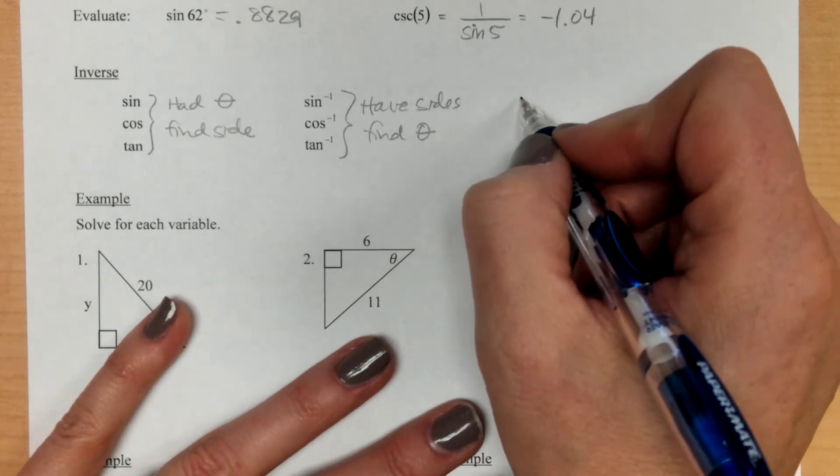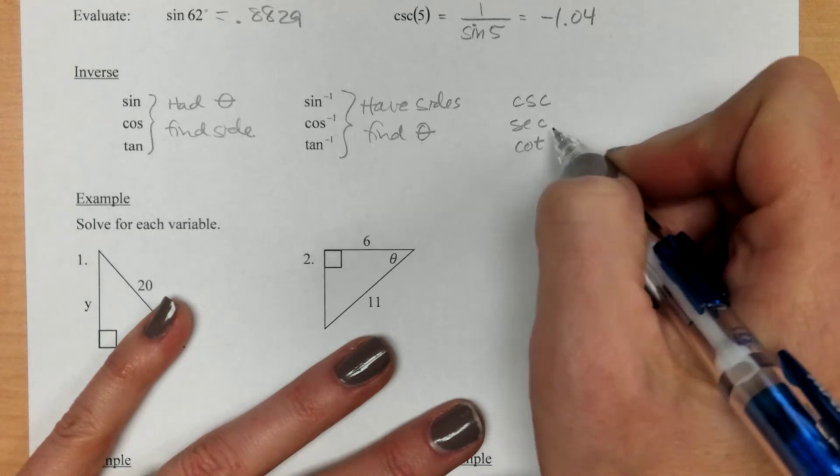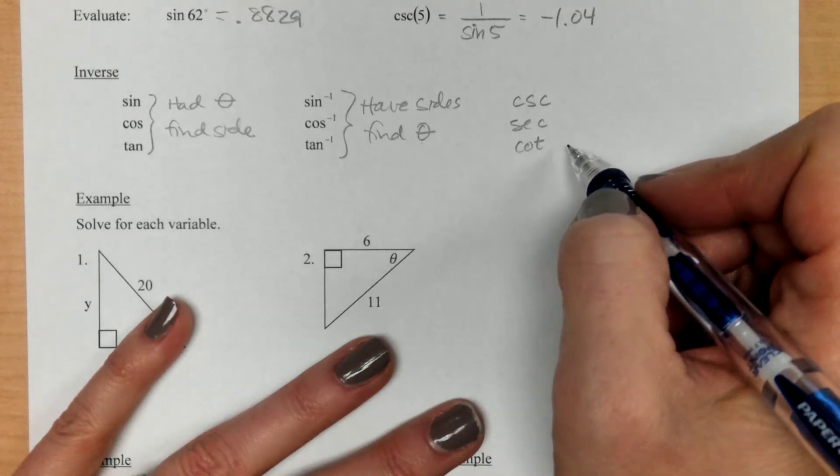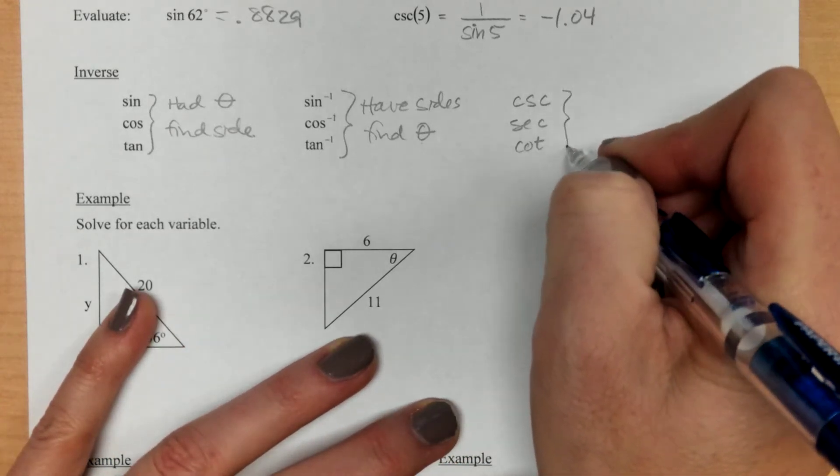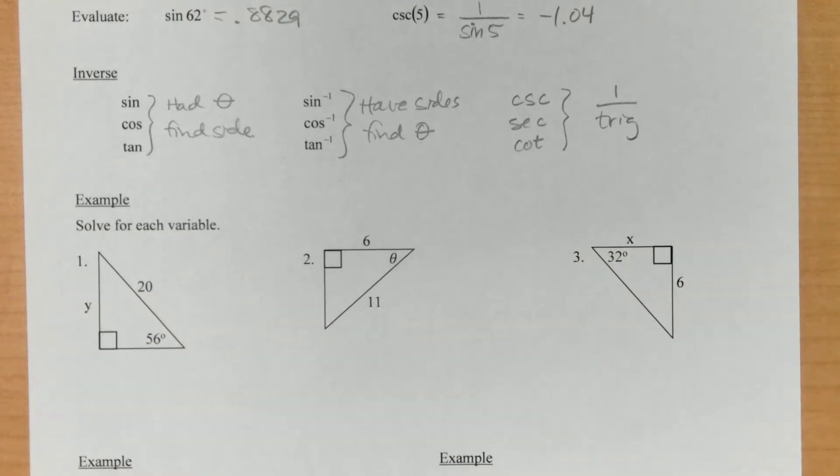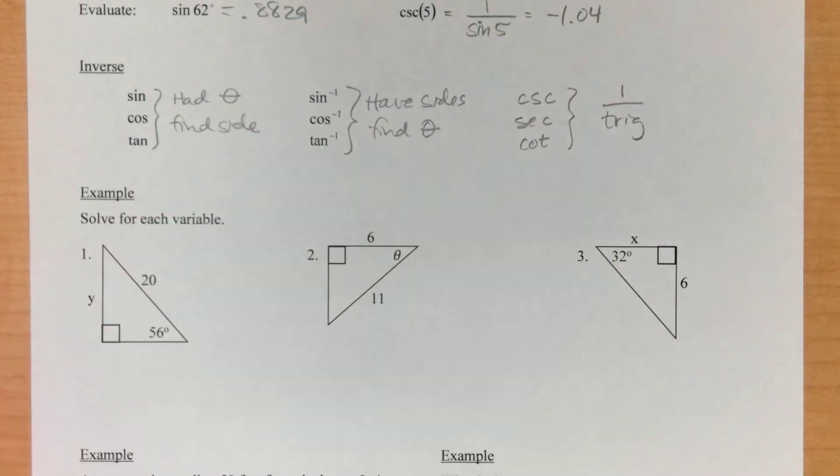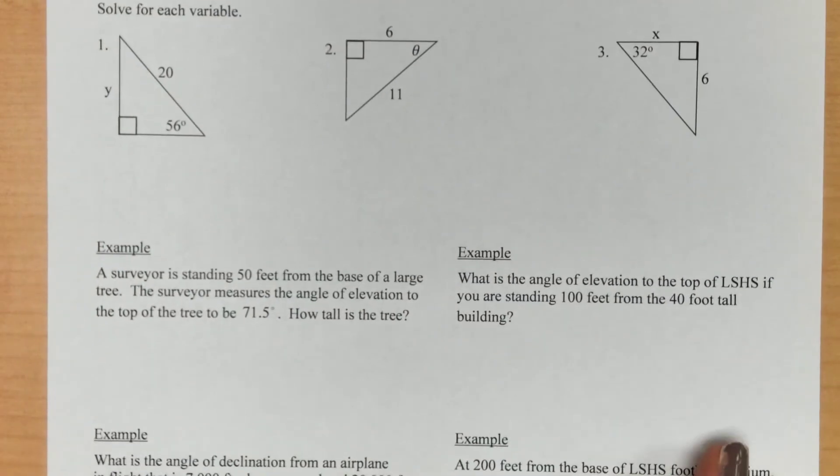So then we've got our three reciprocal functions. So cosecant, secant, and cotangent. And these do not have a button on your calculator. Because remember, these are just 1 divided by their reciprocal trig function. So these two have buttons on the calculator. This one does not. You would just do 1 over whatever you're trying to find.